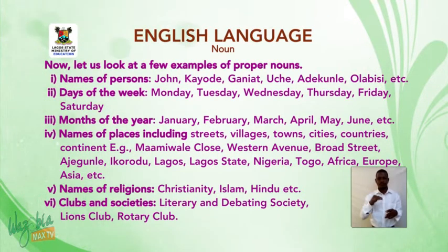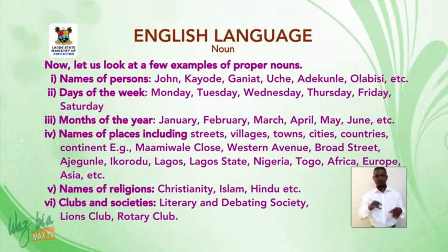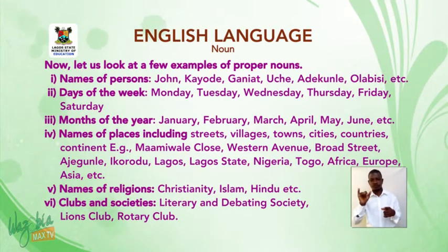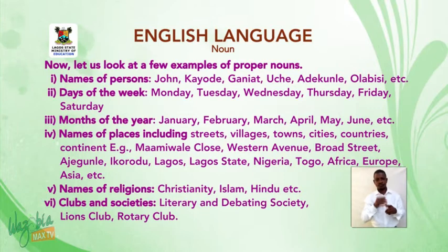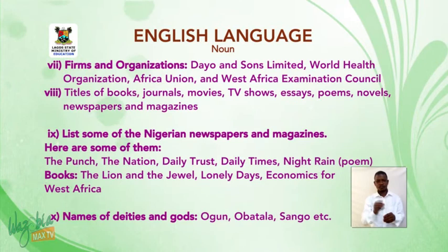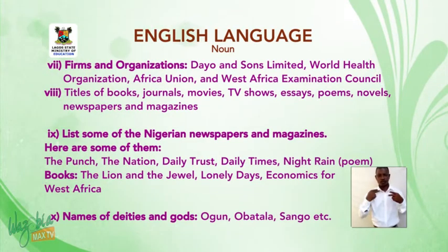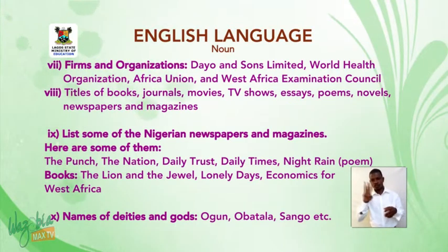Names of religions: Christianity, Islam, Hindu, etc. Clubs and societies: Literary and Debating Society, Lions Club, Rotary Club. Firms and organizations: Dayo and Sons Limited, World Health Organization, African Union, and West Africa Examination Council.